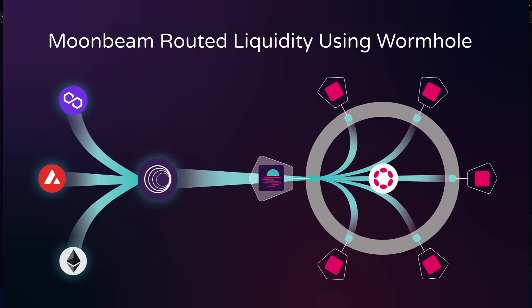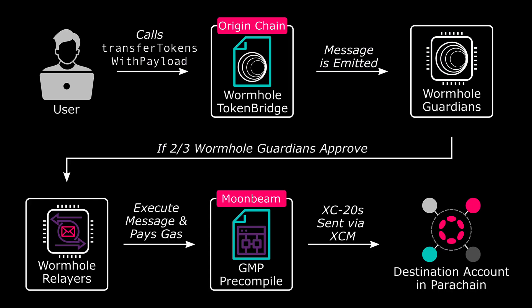Moonbeam Routed Liquidity refers to a Moonbeam use case in which assets from any blockchain ecosystem that Moonbeam is connected to are routed through Moonbeam to other Polkadot parachains. Given that Moonbeam is connected to so many different blockchains via GMP providers such as Wormhole, the possibilities for liquidity flows are virtually limitless. MRL relies on a couple of different key components that work together to make the cross-chain asset flows possible, including general message passing to route the assets between Moonbeam and connected blockchains, XCM to route the assets between Moonbeam and the destination parachain, and XCM-enabled ERC-20s as the final piece of the puzzle.